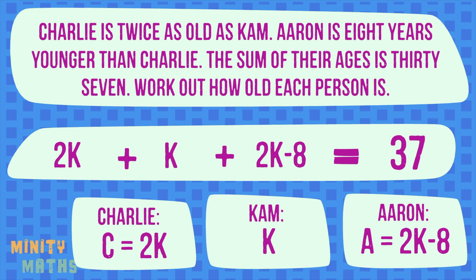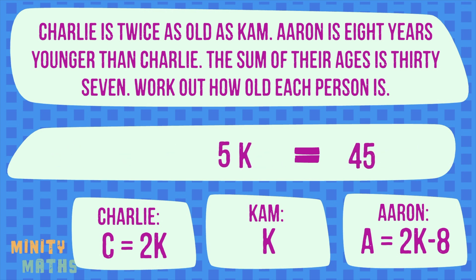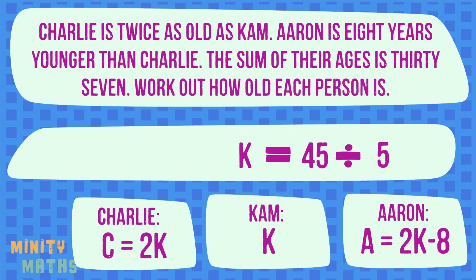As you can see, we now only have one variable to work with rather than three. This means we can actually solve the equation to find out K — in other words, Cam's age. Once we know Cam's age we can use it to work out the rest. Rearrange the equation to collect all the K variables together, then simplify the equation to solve for K. Now use this to find out the other two ages.